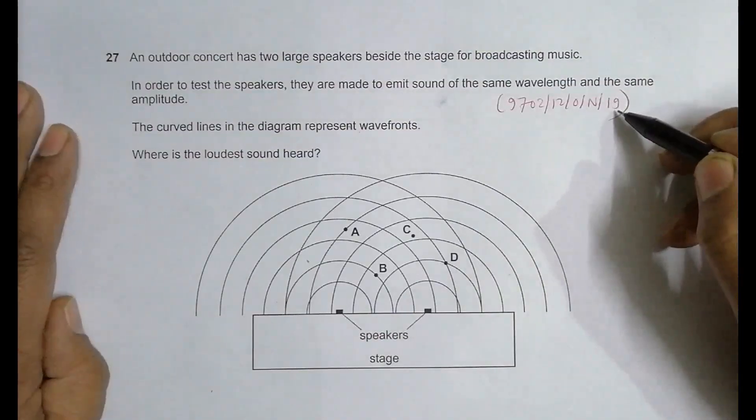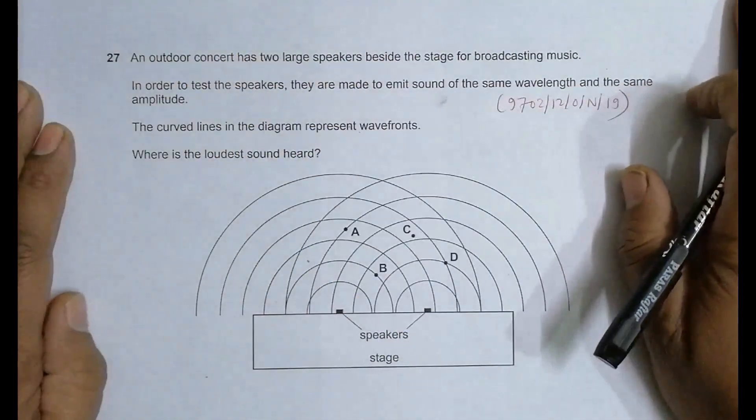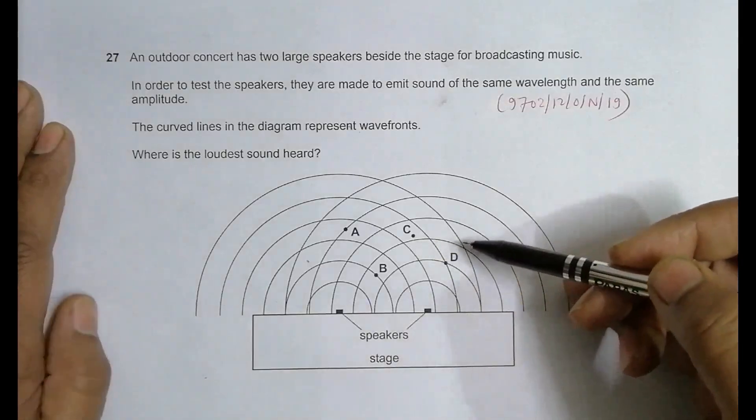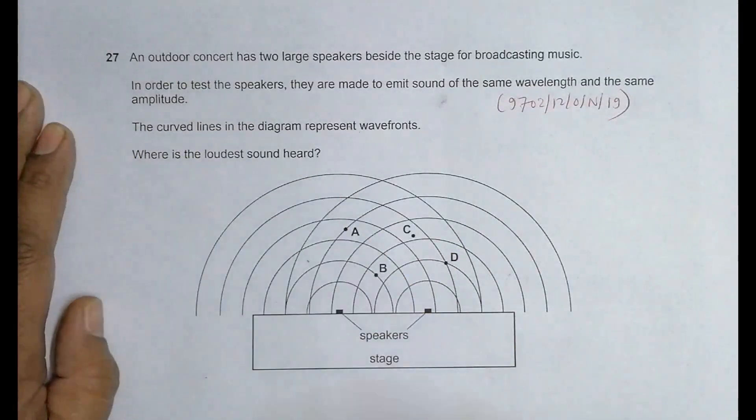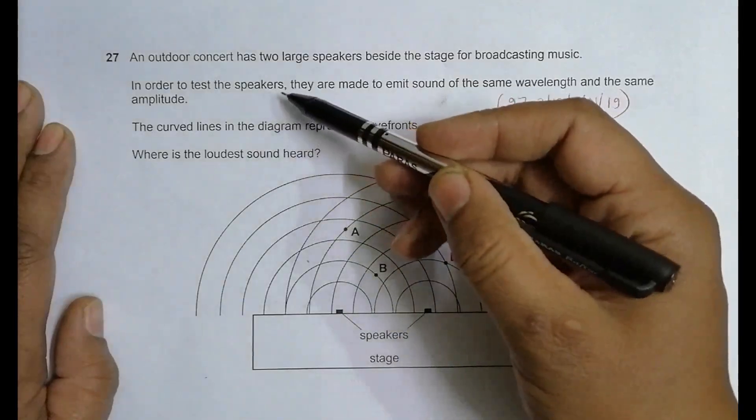Hello folks, this is 2019 October/November paper 12, question number 27. This question is concerned with the chapter superposition of waves, as you can see from the pattern here. An outdoor concert has two large speakers beside the stage for broadcasting music. These are the loudspeakers here.